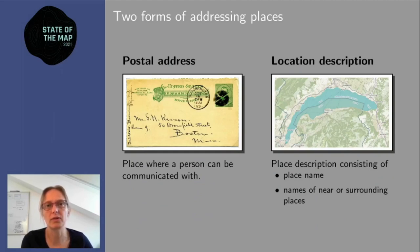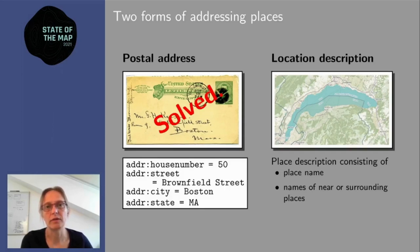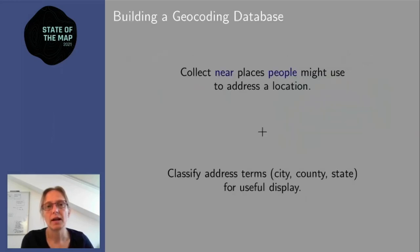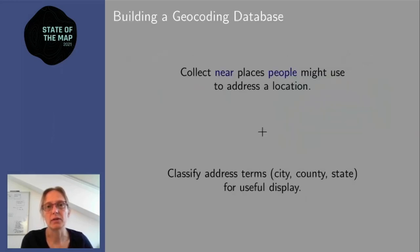Addressing a place has two forms. The first are postal addresses — the stuff you write on a letter. Postal addresses are nice: people generally know them, they're well-structured, with house number, street, city, and maybe state. In OSM this is essentially solved: you have address tags, you can extract them and build a geocoding database. The problem is most places in OSM don't have an address — take Lake Geneva, it's far too big to have a house number. In these cases you need a location description, consisting of the place name and the names of surrounding places.